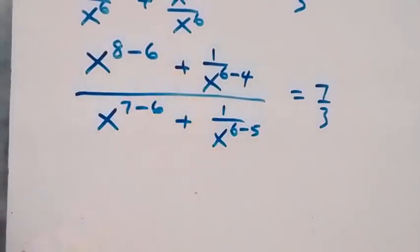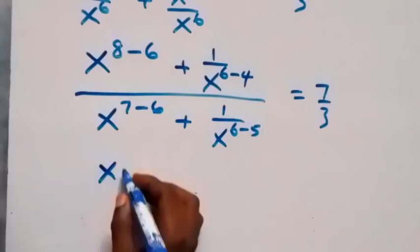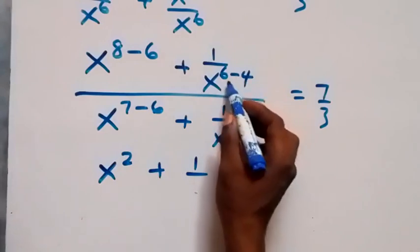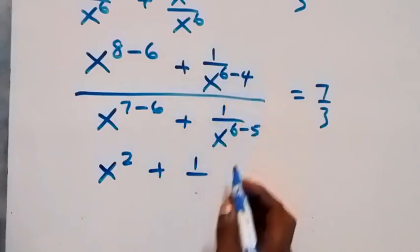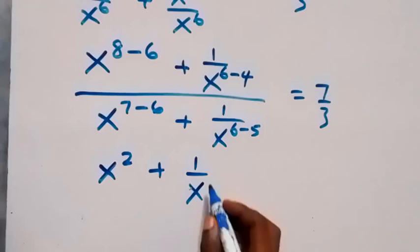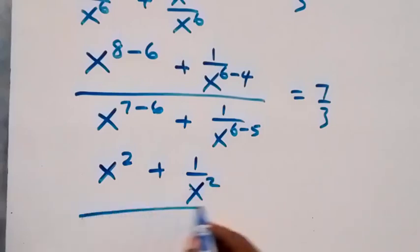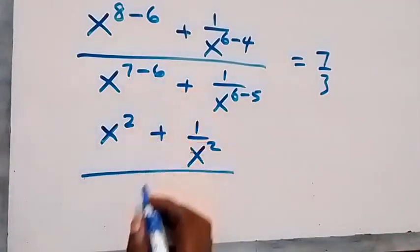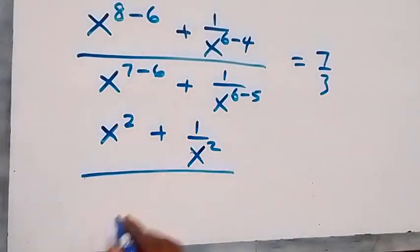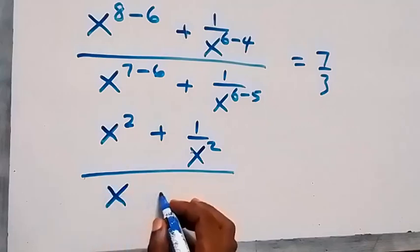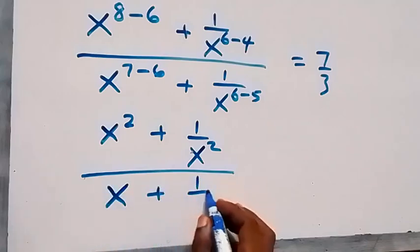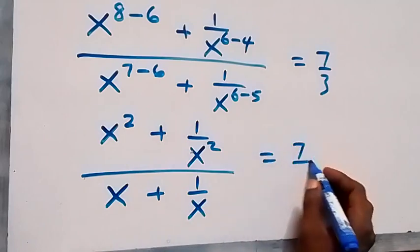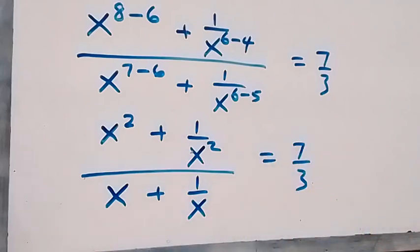So 8 minus 6 gives 2, we have x squared; and 6 minus 4 gives 2, so we have plus 1 over x squared. Then divided by 7 minus 6 gives 1, so that's just x, plus 1 over x, which equals to 7 over 3.